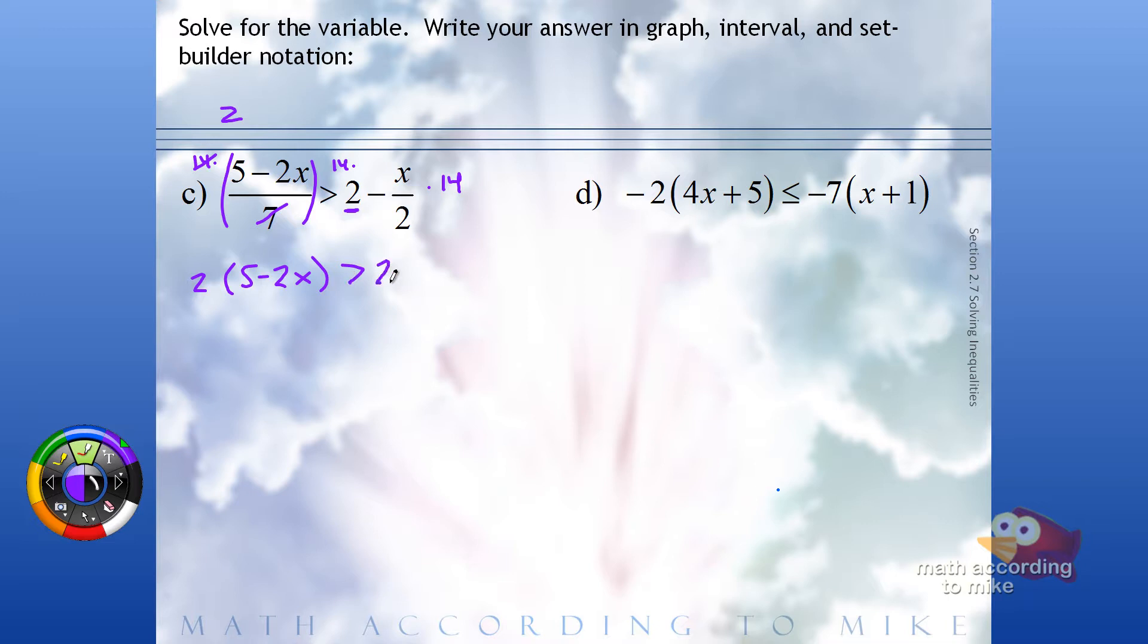14 times 2 is 28. And the 14 and the 2 here reduce down to 7. But that says 7 times x, so minus 7x. Okay? Distribute this 2 through.